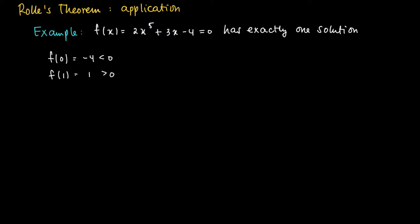Well, first of all we see that f(0) is -4 is smaller than 0 and f(1) is 1 is larger than 0.